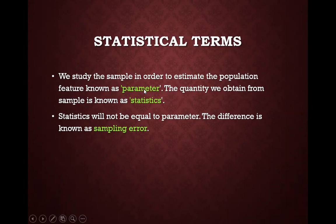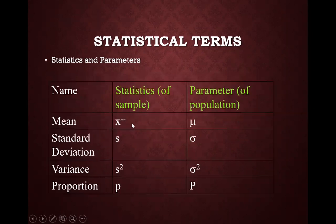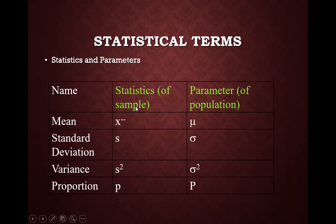We study the sample in order to estimate population features. A population feature is known as a parameter, and the quantity obtained from the sample is known as statistics. Usually, statistics is not equal to the parameter — there is some difference, and this difference is known as sampling error. For example, the mean of a sample is denoted as x-bar, while the mean of the population is denoted by mu. Standard deviation of the sample is denoted by s, whereas the population standard deviation is denoted by sigma.